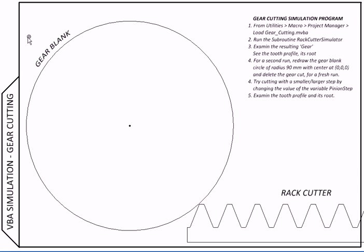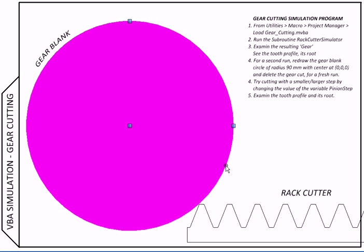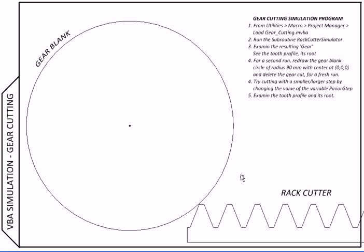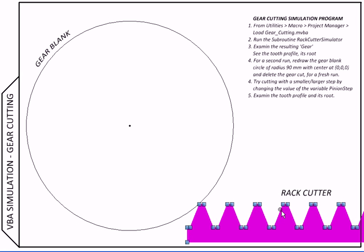Here is a somewhat simplified simulation of the process. So this is our gear blank and this is the rack cutter. And instead of giving one motion to the blank and the other motion to the cutter - say rotation to the blank and translation to the cutter - we are going to give both the motions, rotation as well as translation, to the rack cutter.